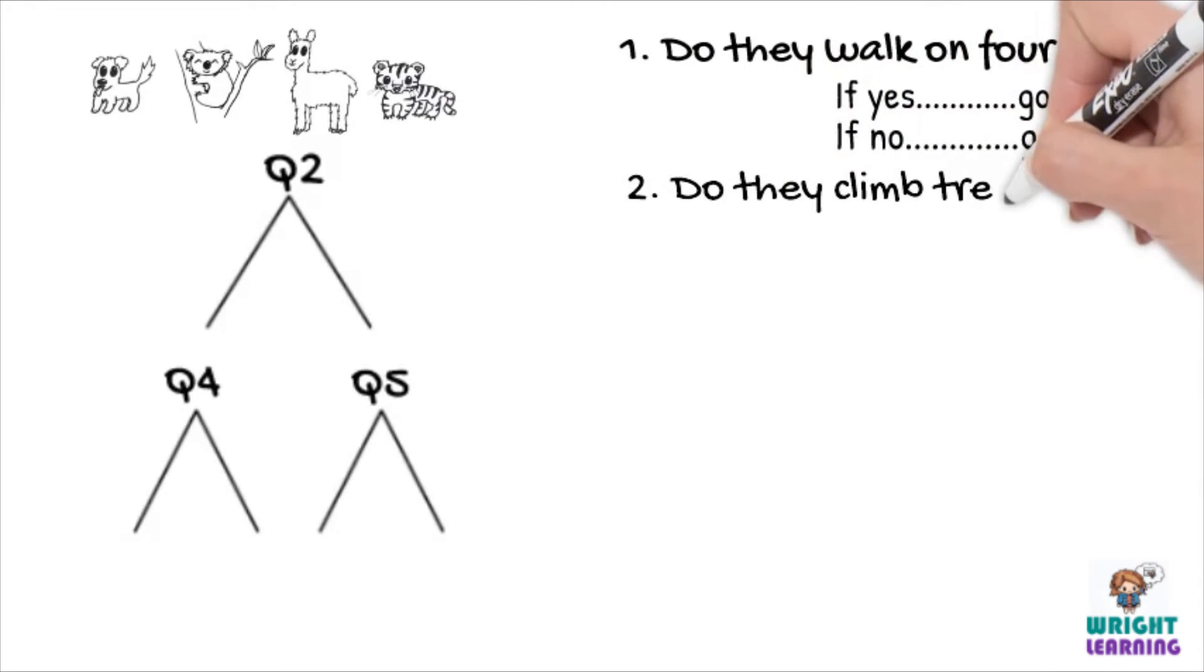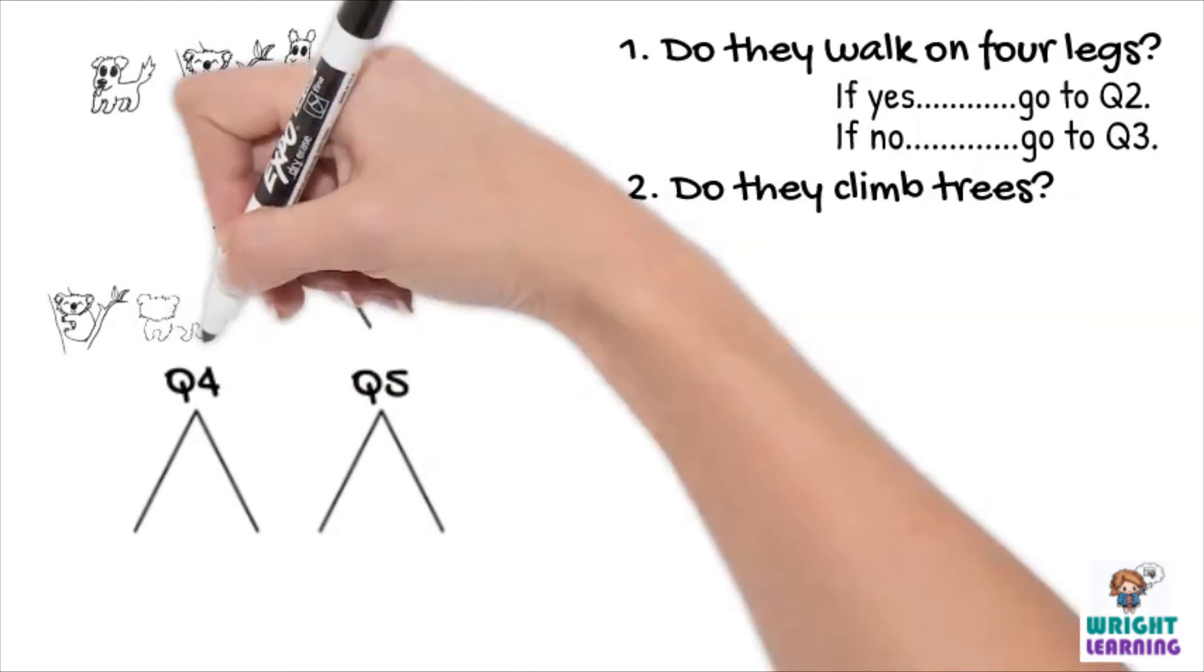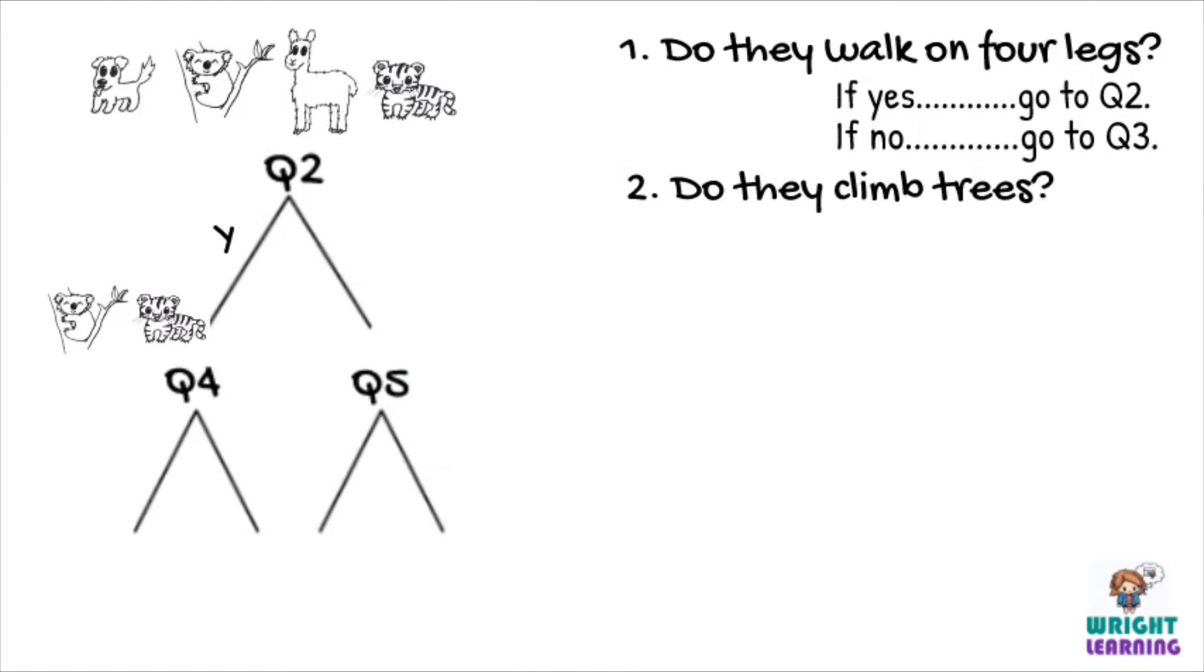One way we can split this group of organisms in two is to ask, do they climb trees? Using their claws, both koalas and tigers have the ability to climb trees. And see how their branch of the tree diagram leads to question 4? That means for our written dichotomous key, we can write, if yes,